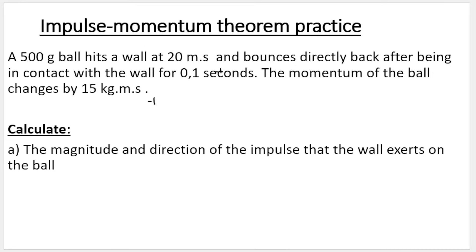Let's read the question. The question says a 500 gram ball. You first need to know that when you see grams in physics, we don't work with grams — we work with grams in chemistry. If you see grams in physics, we have to convert it to kilograms by dividing by 1,000. So that gives me 0.5 kilograms.